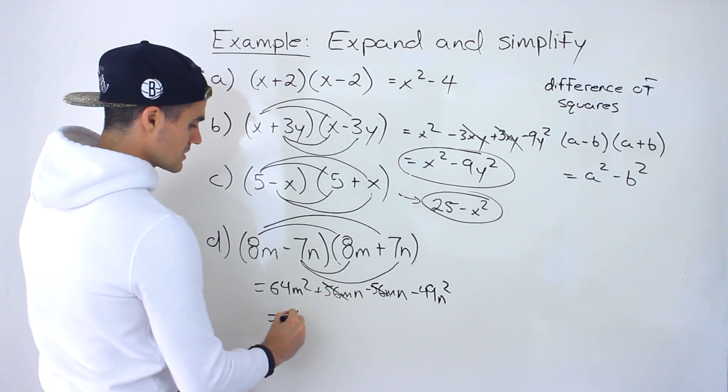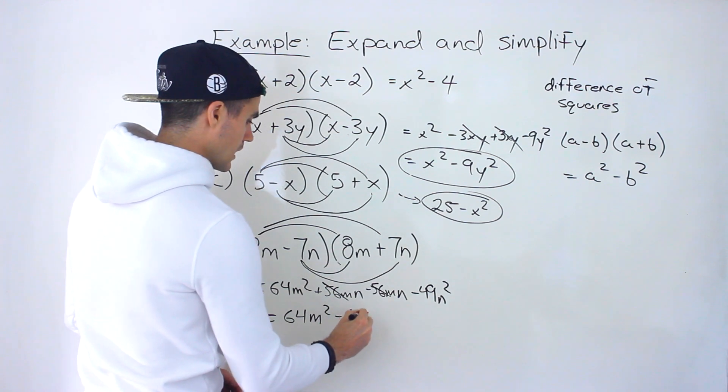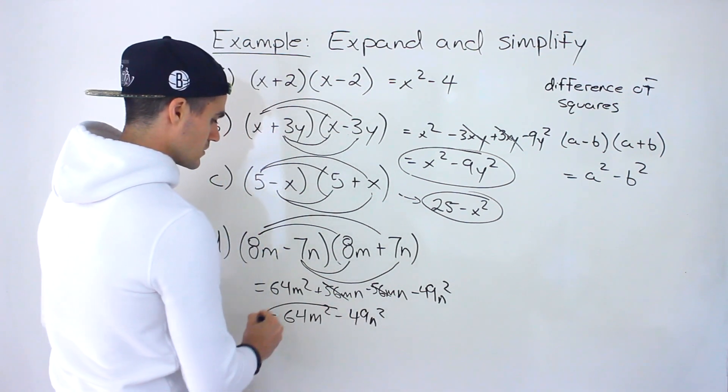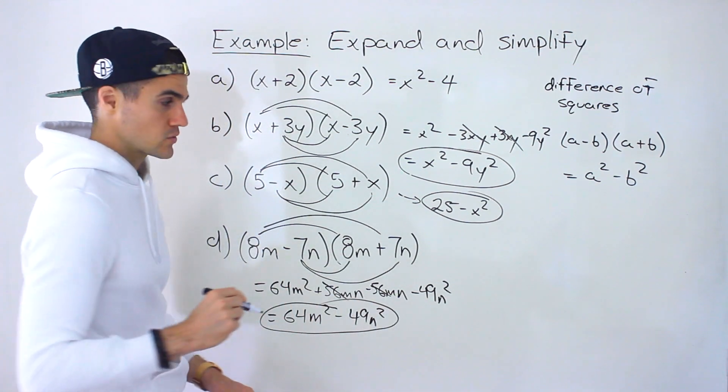Those cancel out. So we're left with 64m squared minus 49n squared. That difference of squares right there.